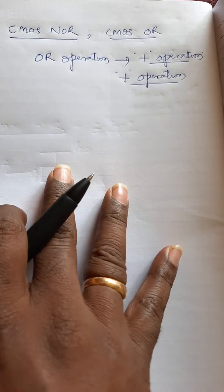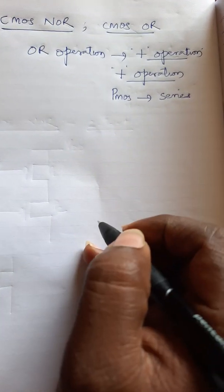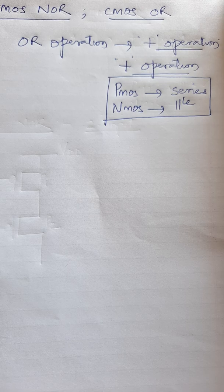If it is an OR operation, it indicates the plus operation. When you are trying to draw the CMOS NOR gate, always keep in mind: if it is a plus operation, the schematic representation of NOR or OR at the transistor level is done this way — the PMOS should always be in series, and the NMOS should be in parallel. This is a fundamental connection point for drawing PMOS and NMOS with respect to the NOR gate.